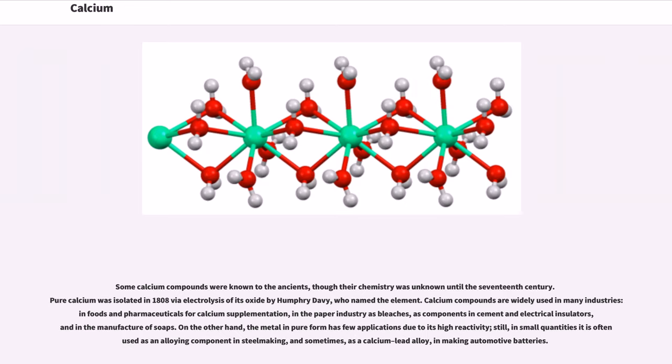Some calcium compounds were known to the ancients, though their chemistry was unknown until the 17th century. Pure calcium was isolated in 1808 via electrolysis of its oxide by Humphry Davy, who named the element.